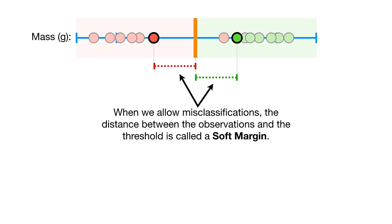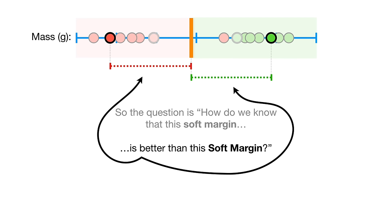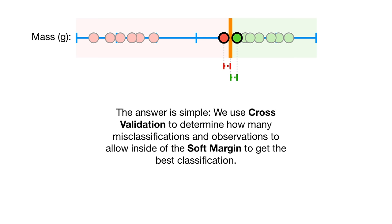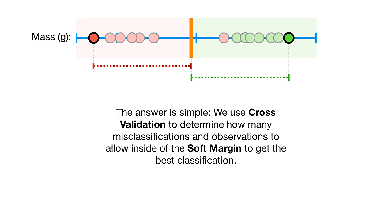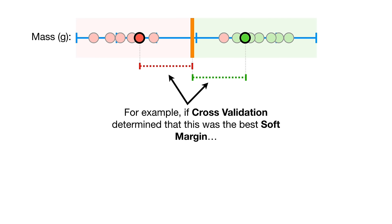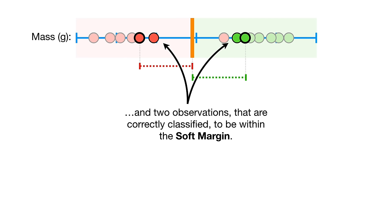When we allow misclassifications, the distance between the observations and the threshold is called a soft margin. The question is: how do we know which soft margin is better? We use cross-validation to determine how many misclassifications and observations to allow inside of the soft margin to get the best classification. For example, cross-validation might determine that allowing one misclassification and two correctly classified observations within the soft margin is best.